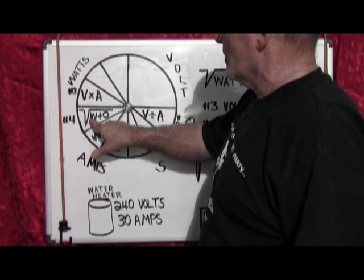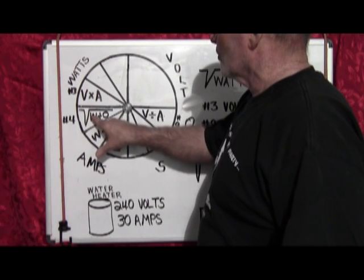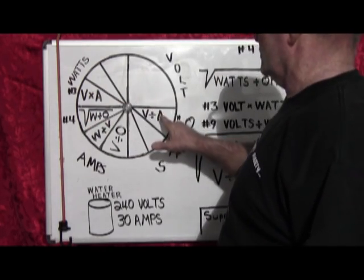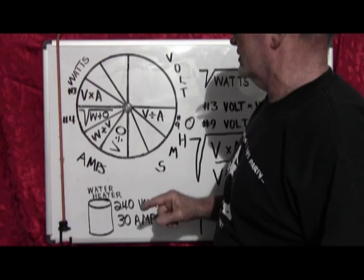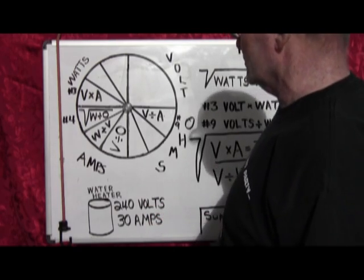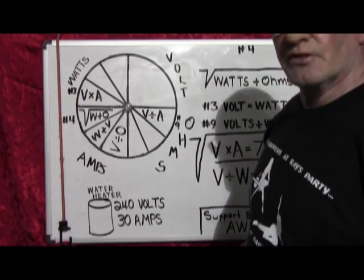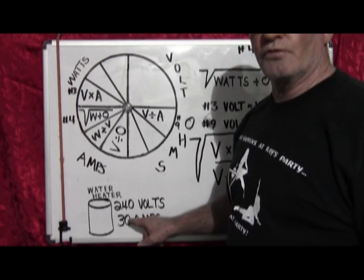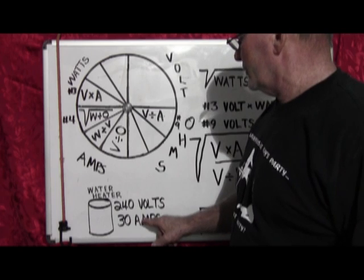So let's start with number four. We have to use two different equations to solve for the unknowns, and we're using a standard water heater which is 240 volts and 30 amps.